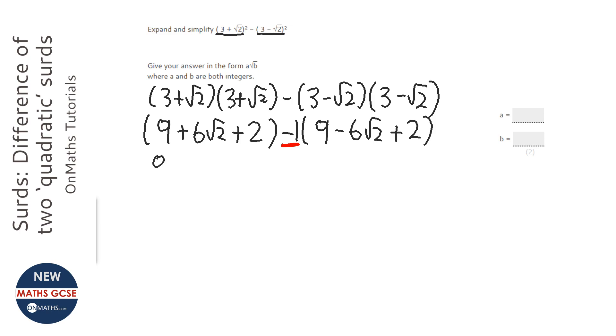So the first bracket's unaffected, so we're just going to get rid of the brackets there. Don't need to worry about that. But the second bracket, I need to times everything by minus 1.